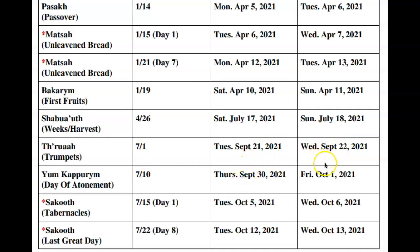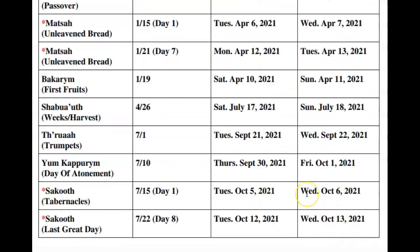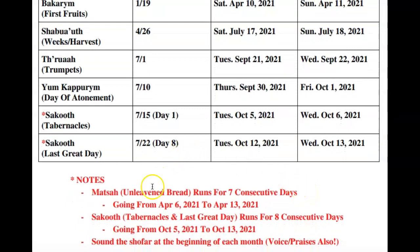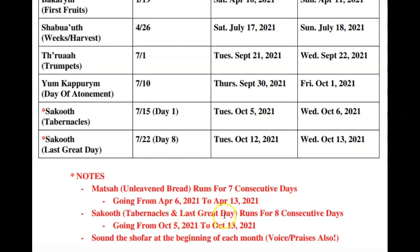The Day of Atonement will be September 30th through October 1st, 2021. Then there's also Tabernacles, which is an eight-day festival running for eight consecutive days, starting October 5th, 2021, going all the way until October 13th, 2021. I also listed notes about how Matzah runs for seven consecutive days and Tabernacles with the Last Great Day runs for eight consecutive days from October 5th through October 13th.